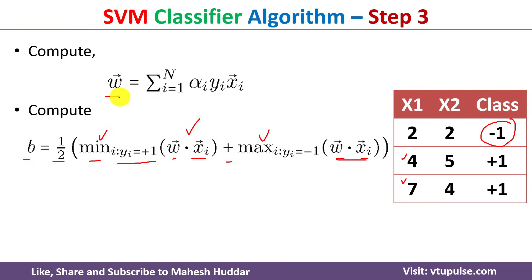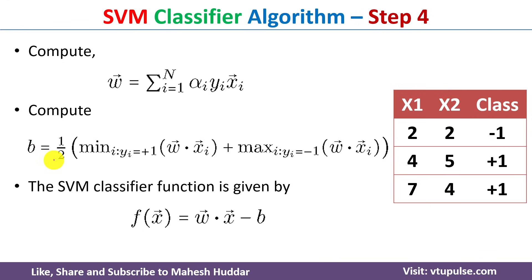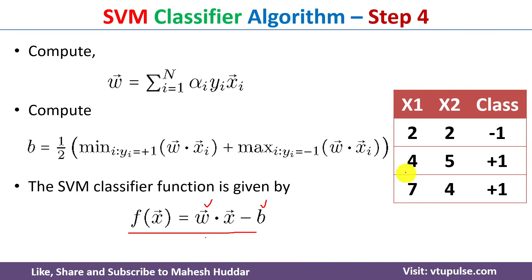Once the weight vector and bias are calculated, the next step is to form the SVM classifier equation — that is, the hyperplane equation. It is: f(x) = w · x - b, where w is the weight vector already calculated and b is the bias already calculated. x is a support vector.